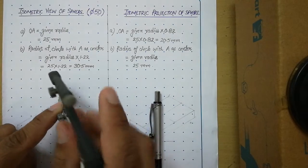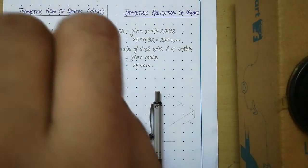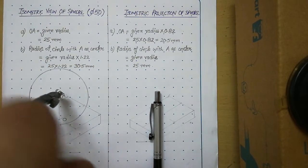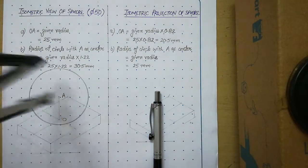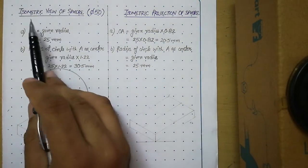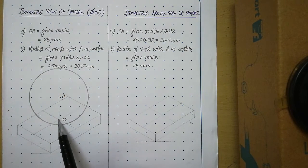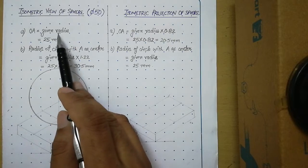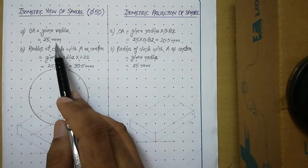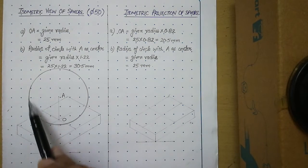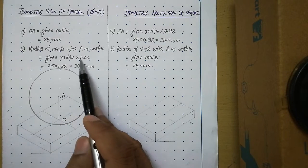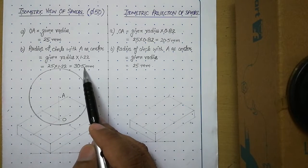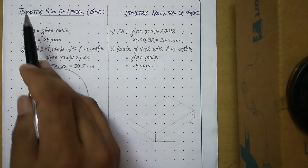Take A as center and draw a circle, making it thick. We call this the isometric view of the sphere. To summarize: from the center, draw a vertical line OA equal to the given radius. The diameter was 50, so radius is 25. Then with A as center, draw a circle whose radius equals the given radius multiplied by 1.22, which gives 30.5 mm. With this procedure, you can draw the isometric view of a sphere.